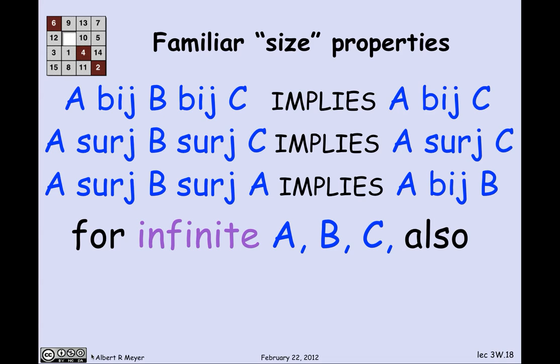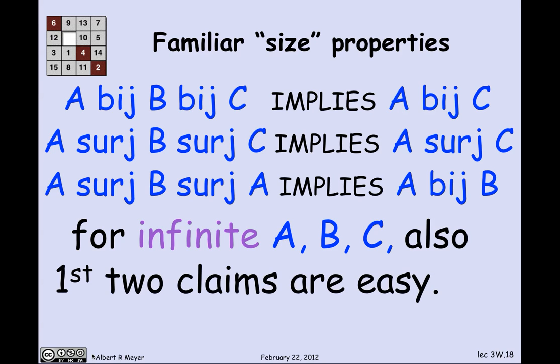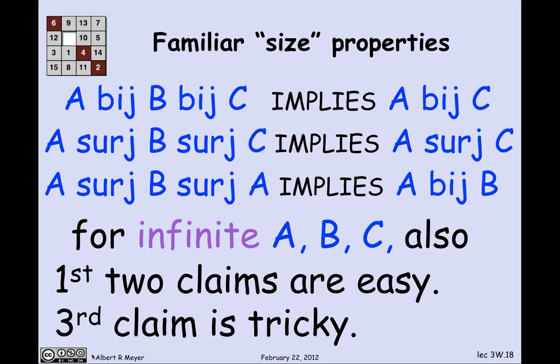The answer is that the first two claims — transitivity of Bige and transitivity of Surge — go through easily for infinite sets. For Bige, you simply compose the bijection from A to B with the bijection from B to C; the composition of bijections is a bijection. Likewise, the composition of surjections is a surjection, proving the second claim. The third claim, however, is much more interesting and not at all obvious. It is called the Schroeder-Bernstein theorem, and it will come up in a few more lectures.